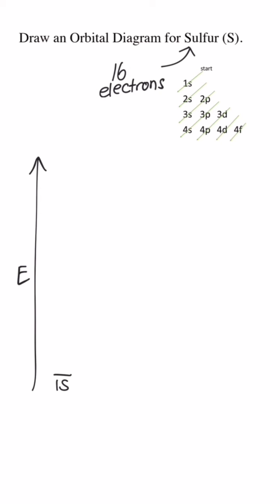On the 1s sublevel, there's just one orbital. S orbitals always have one orbital. There can be two electrons in an orbital, so I'll draw one up and one down arrow. Next is the 2s. It's a little higher in energy, but it's still an s, so it can have two electrons.